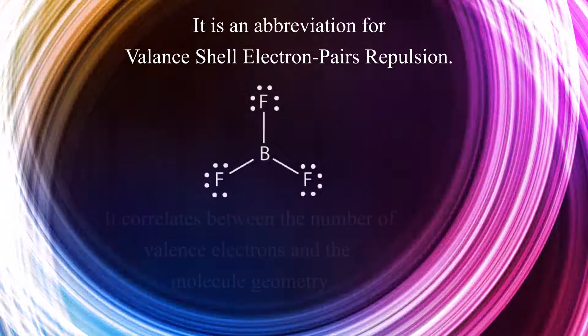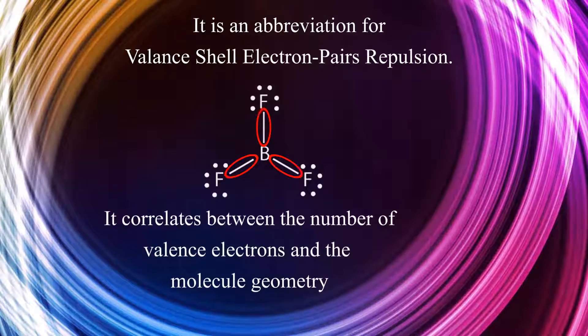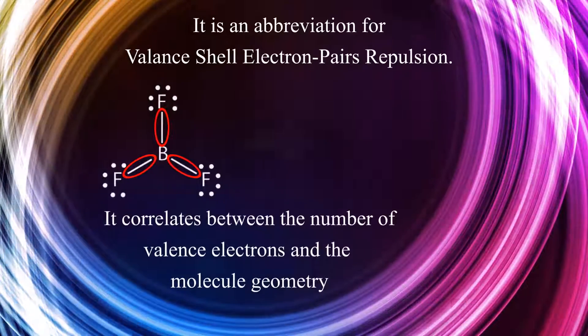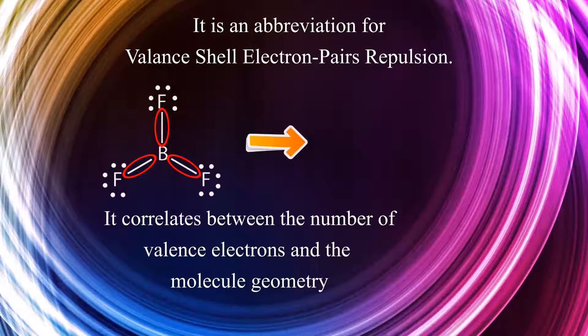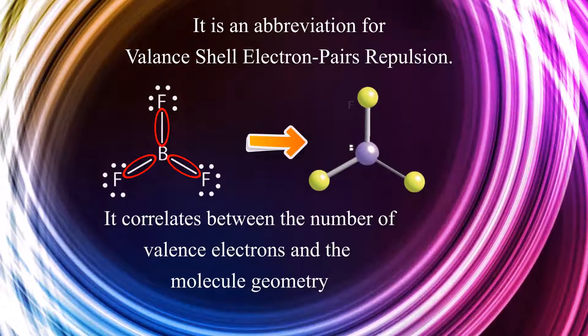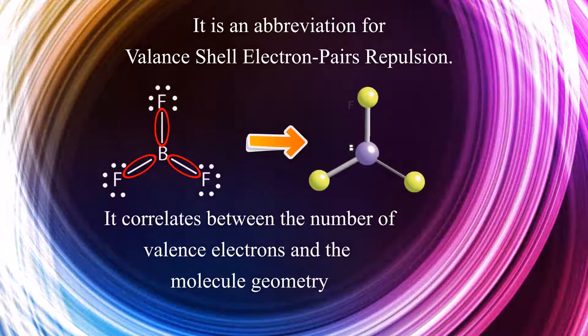The theory correlates between the number of valence electrons and the molecule geometry, which means that the electron clouds want to get as far away from each other as possible.